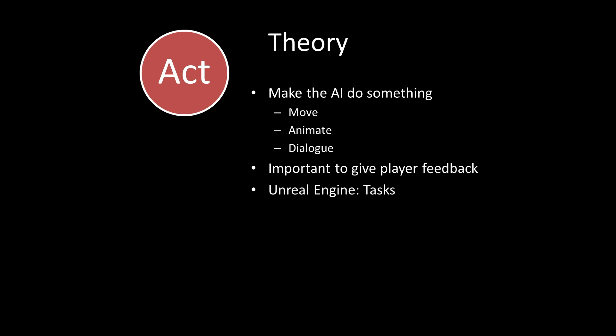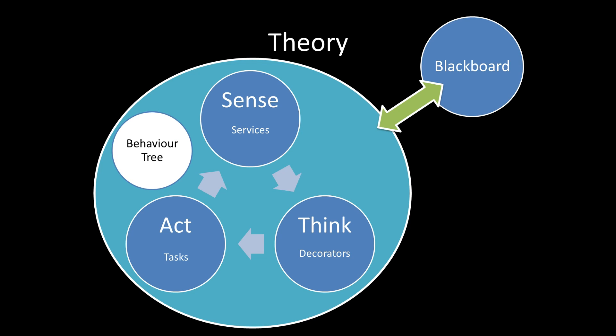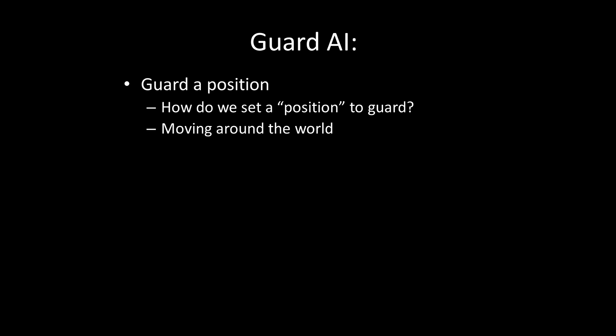To summarize the whole model: the behavior tree is the entire sense-think-act cycle in one lump. You've got the senses as services, the decision-making thinking part as decorators, and the acting part as tasks. Those are just the names the designers of the Unreal Engine AI decided to use. All of this behavior tree relies on data coming to and from the blackboard.